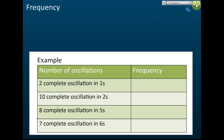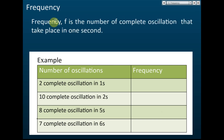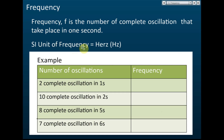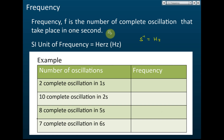Now what does it mean by frequency? By definition, frequency f is the number of complete oscillations that take place in one second — how many complete oscillations happen in one second. The SI unit of frequency is hertz, also written as s to the power of negative one, meaning per second.